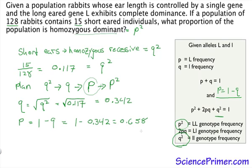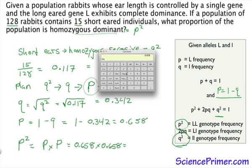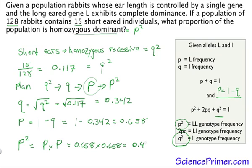And we can go from p to p squared by simply multiplying p by p. So p times p is 0.658 times 0.658, which gives us 0.43.